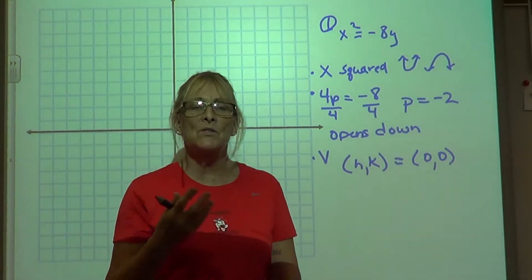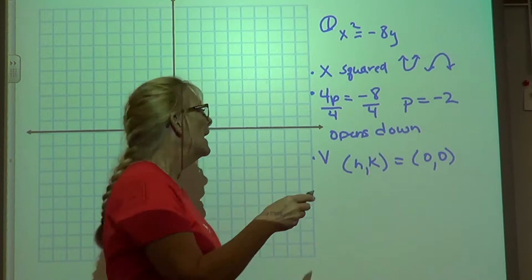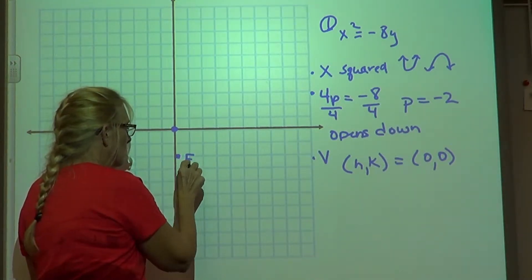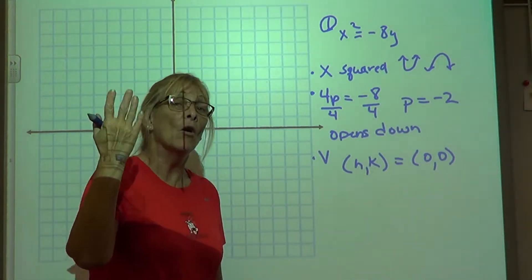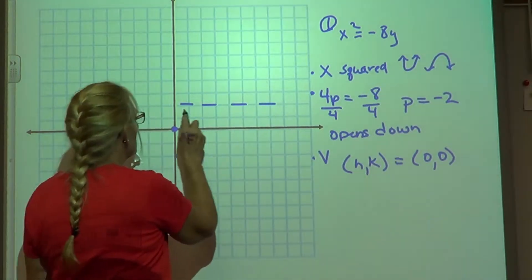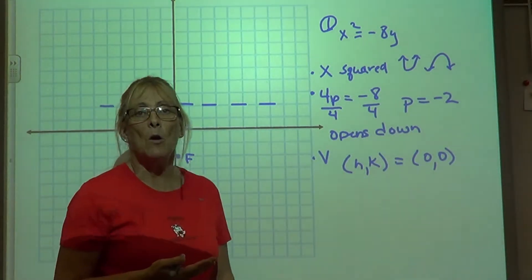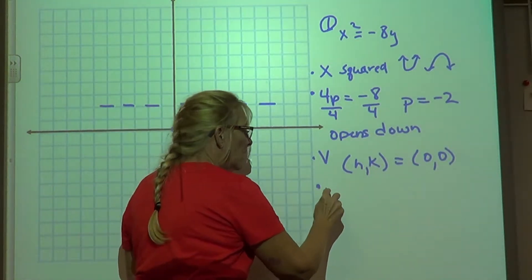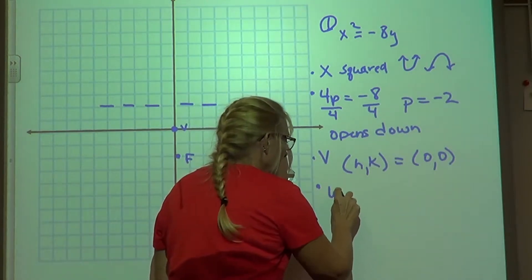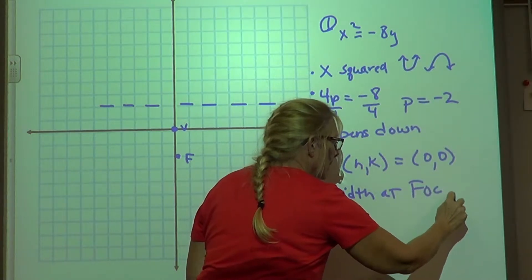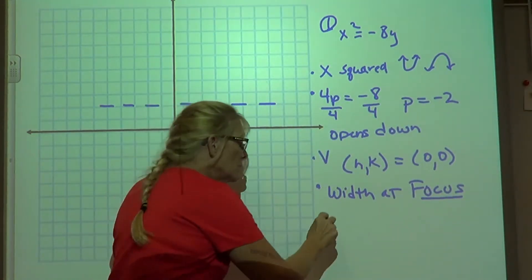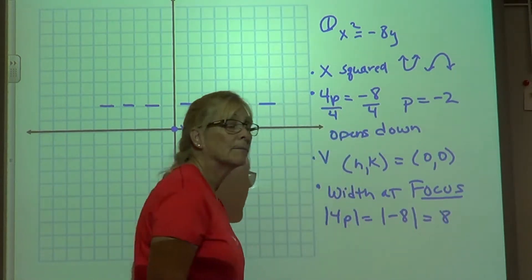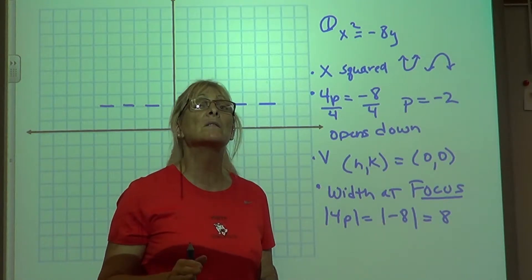Since it opens down and the focus is always inside the curvature of the parabola, and this opens down, then my focus will be 2 units down. My directrix is 2 units in the other direction, which shapes our parabola. Now, it would be great to draw one, we just don't know how wide. So the last bit of information is the width of the parabola at the focus. So the width of the focus is going to be the absolute value of 4p. In this case, 4p is negative 8, making it 8 units wide. But since our parabolas have to be symmetric, we're going to go 4 units in each direction from the focus.